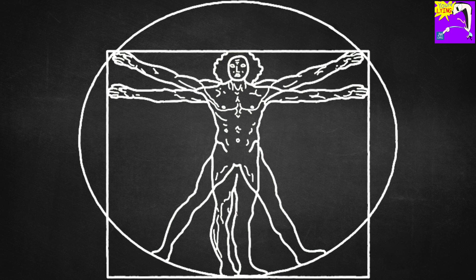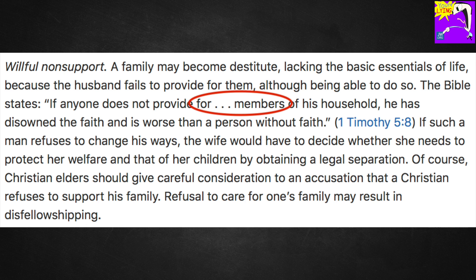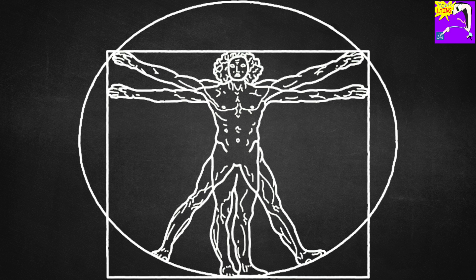Okay, so now that we know what separation is, let's take a look at the rules for separation. There are three of them. Here's the first one, willful non-support. It says, a family may become destitute, lacking the basic essentials of life because the husband fails to provide for them, although being able to do so. The Bible states, if anyone does not provide for members of his household, he has disowned the faith and is worse than a person without faith.